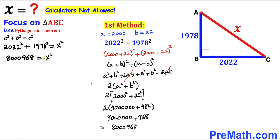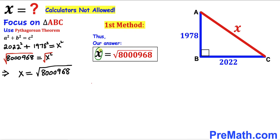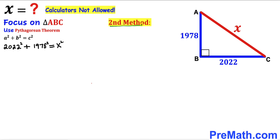Therefore, X squared equals 8,000,968. Taking the square root of both sides, X equals the square root of 8,000,968 units. That is our answer using the first method. Now let me show you the second method as well.